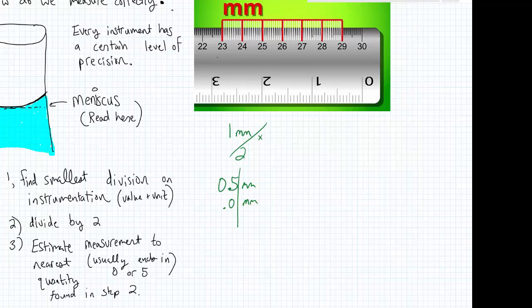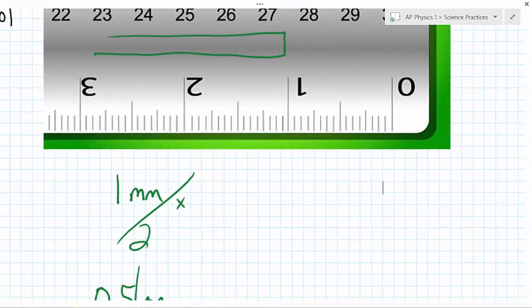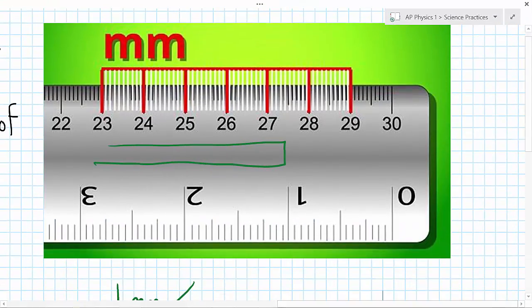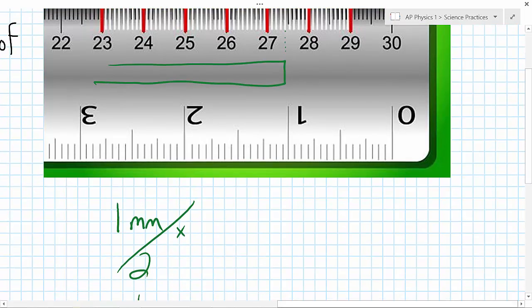So let's say I'm measuring a pencil here or something, and I'm measuring this. And so I look over here and I'm trying to figure out what is this. And I'm going to try my best, 27.1234. It's like about 27.4,